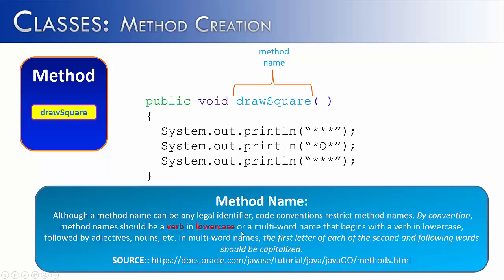Or a multi-word name, draw a square, that begins with a verb, draw in lowercase, followed by adjectives, nouns, etc. Well a square is a noun. What is the name of the method? To draw a square. What does the method do? It draws a square. So you see that connection is often helpful in naming a method. If a method can describe what action it's performing, it will be helpful to the programmers that use it.